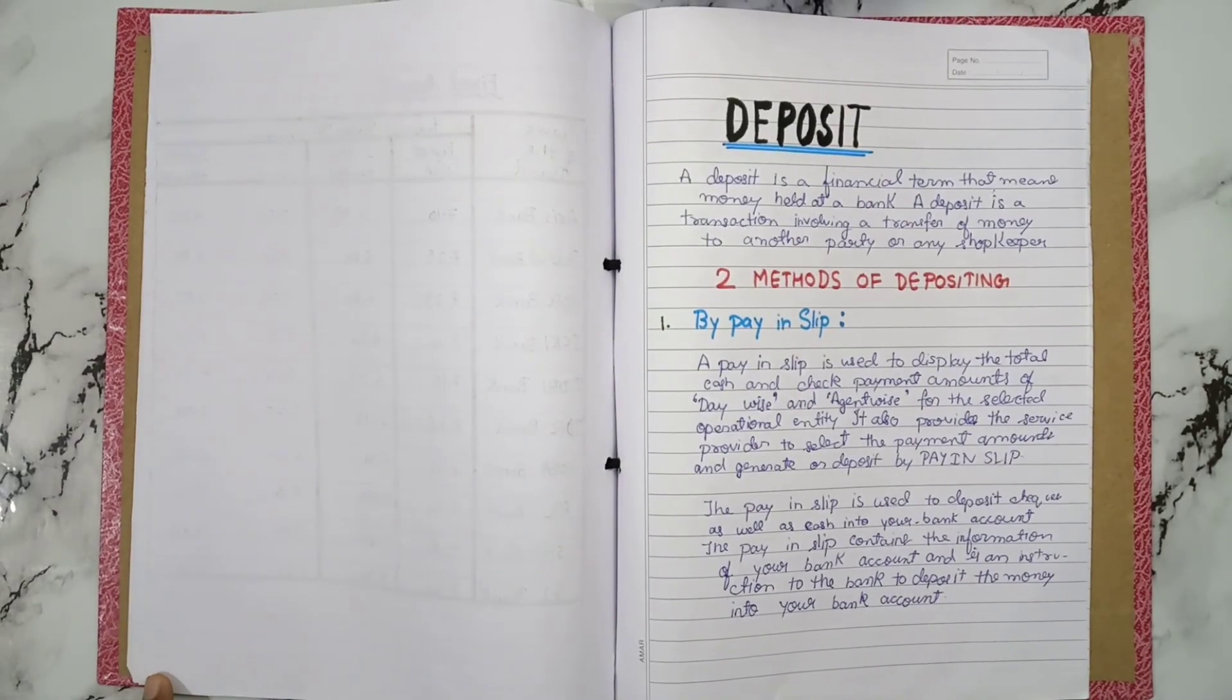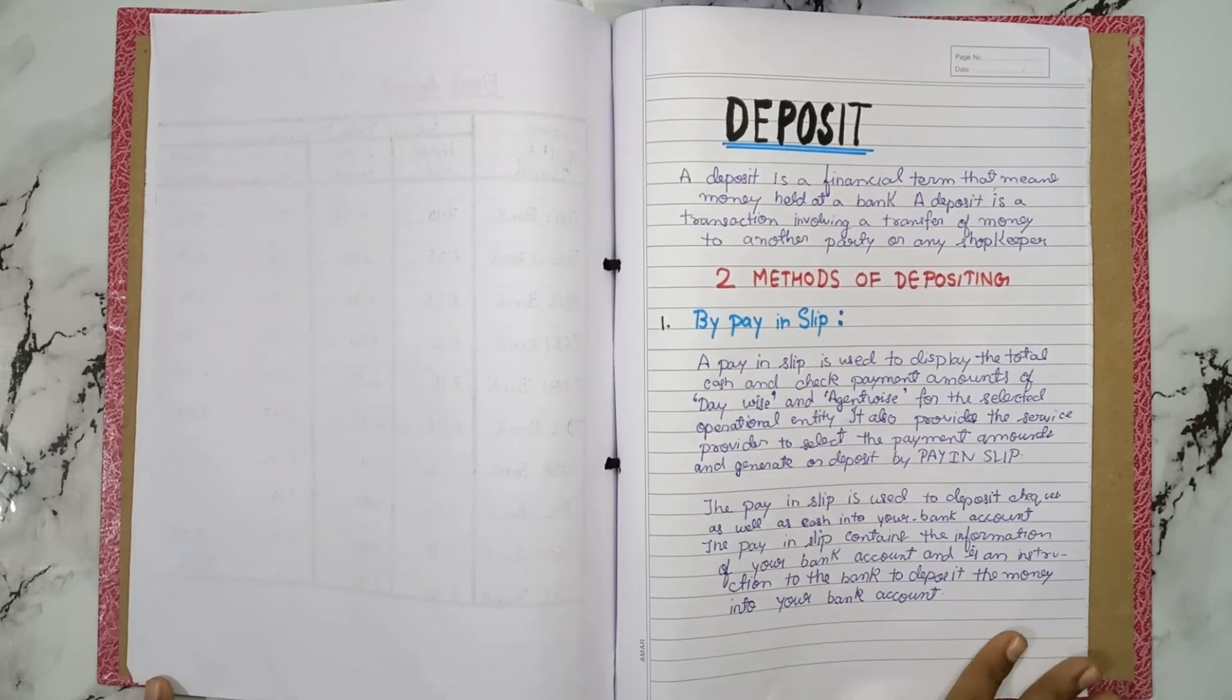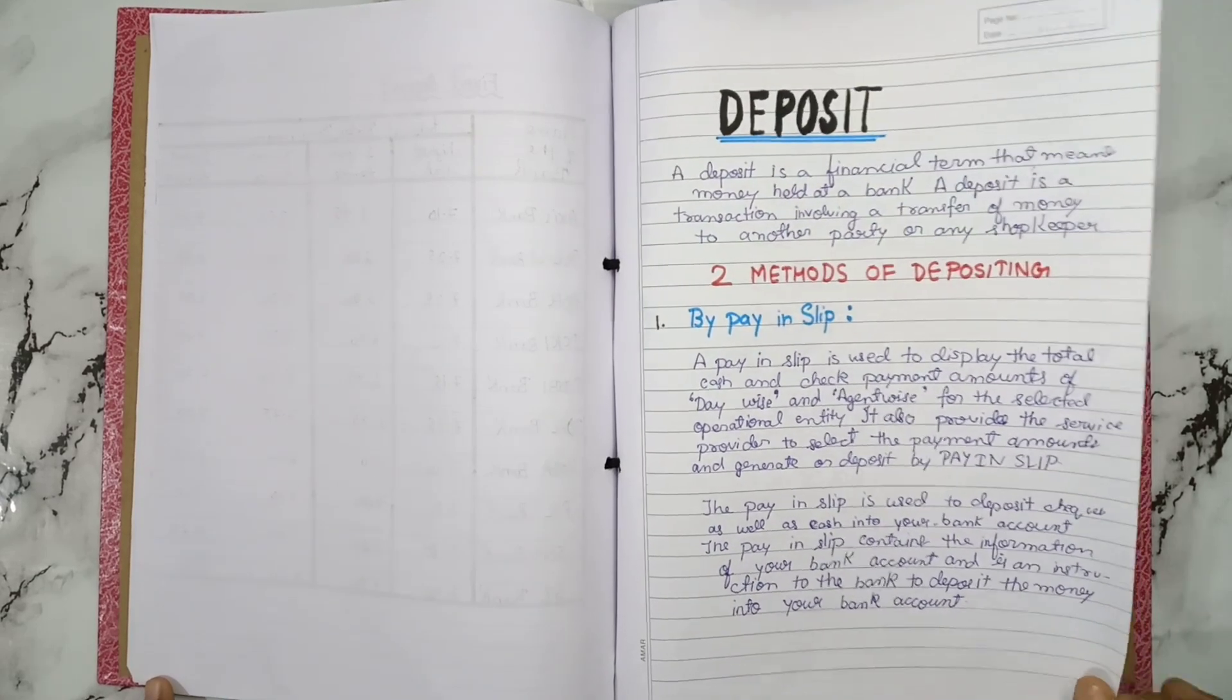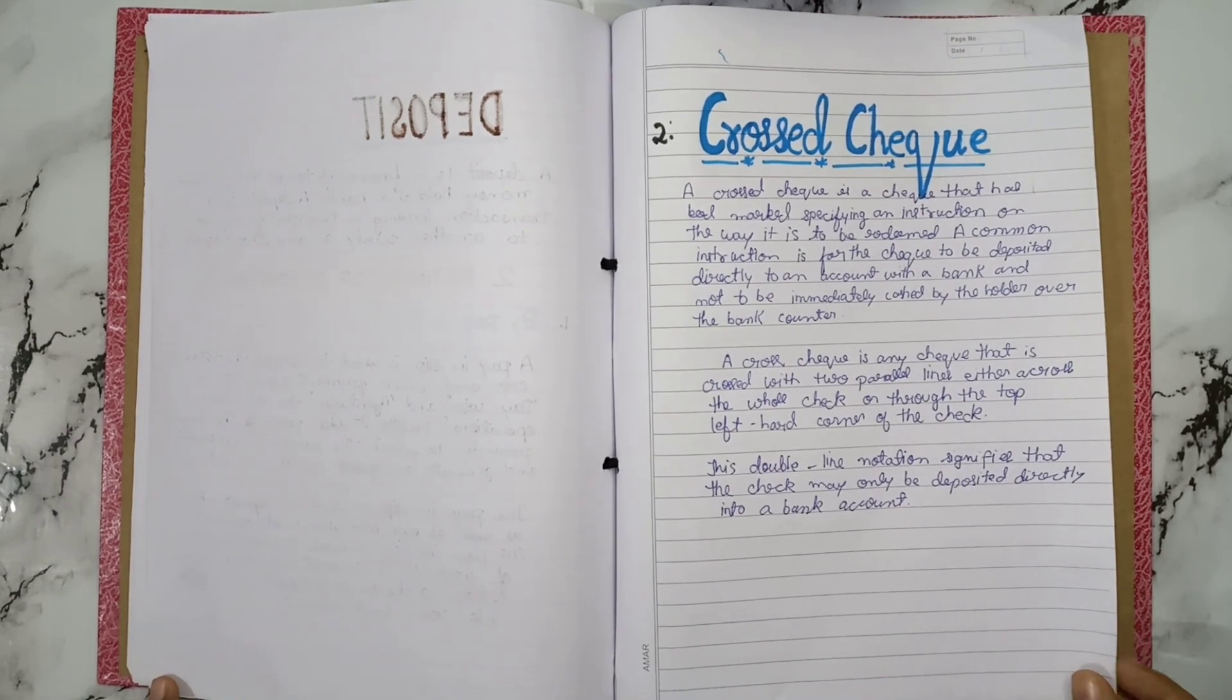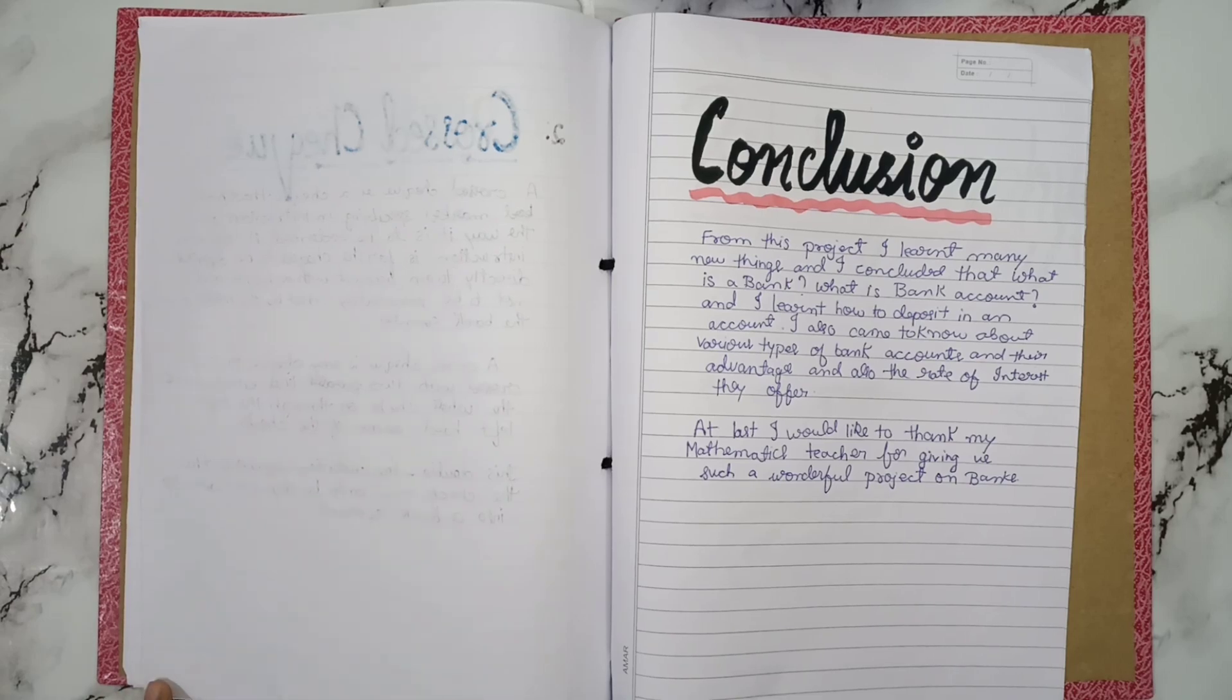These are deposits, two types, two methods of depositing. By pay in slip. Here you can paste a pay in slip on the left side of the page, that is on the white side. You can easily get a pay in slip from a nearby bank, any bank. You can paste it there.